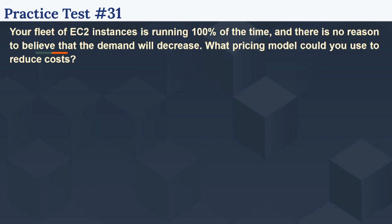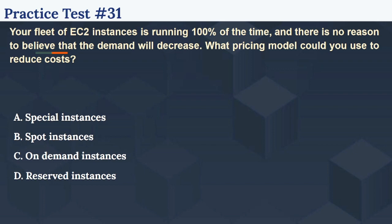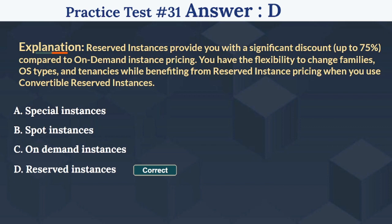The options are: Option A Special Instances, Option B Spot Instances, Option C On-Demand Instances, Option D Reserved Instances. The right answer is D, Reserved Instances. Reserved Instances provide you with a significant discount, up to 75% compared to on-demand instance pricing. You have the flexibility to change families, OS types, and tenancies while benefiting from reserved instance pricing when you use convertible reserved instances.